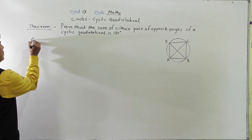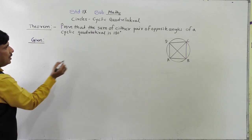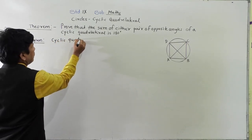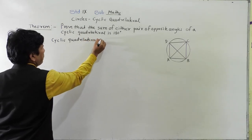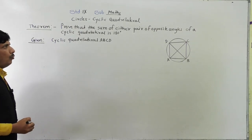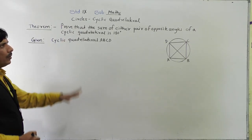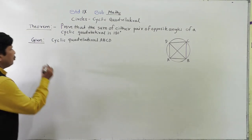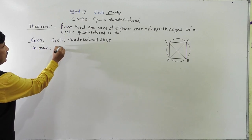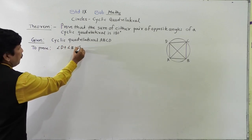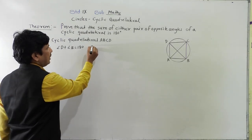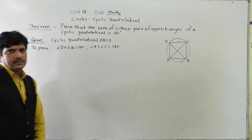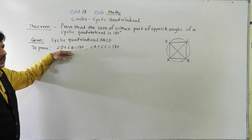First we will mention the given things. In given, they have given us cyclic quadrilateral ABCD. Now, what we need to prove? Either pair of opposite angles of a cyclic quadrilateral is 180 degrees — meaning we have to prove angle D plus angle B is equal to 180 degrees, and also angle A plus angle C is equal to 180 degrees. This is our target.